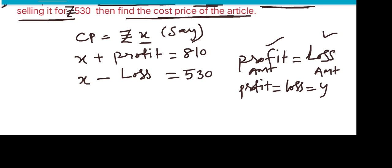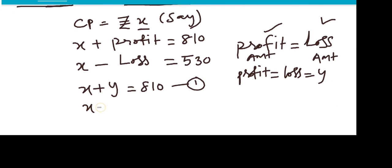So x plus y equals 810, this is equation 1. And x minus y equals 530, this is equation 2.